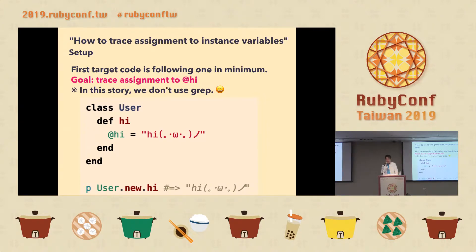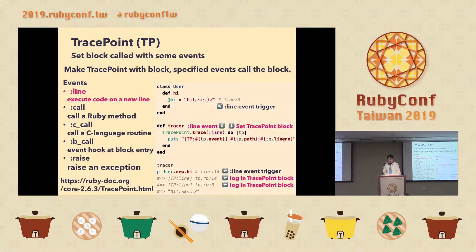The target is the following minimal example. The goal is to trace assignment to the instance variable @high. In this story we don't use grep. We are trying to get assignment information using TracePoint. We make a TracePoint with a block — specified events call the block.